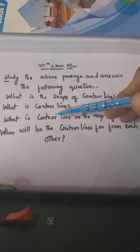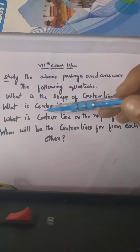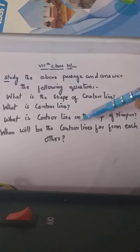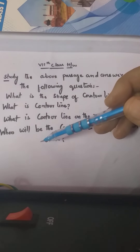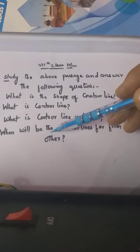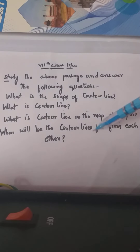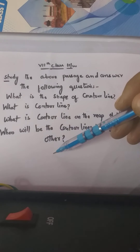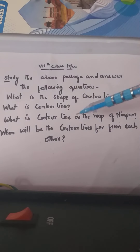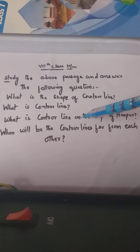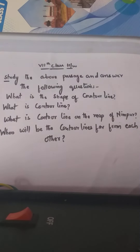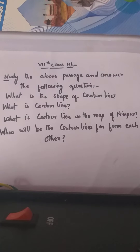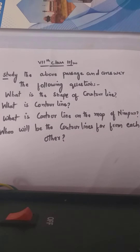The distance between two contour lines depends upon the landscape. If the land has a steep climb, the contour lines will be near each other. If the slope of the land is gentle, the contour lines will be quite far from each other. These questions you have to solve in the classwork — this is your homework, children. Thank you very much.